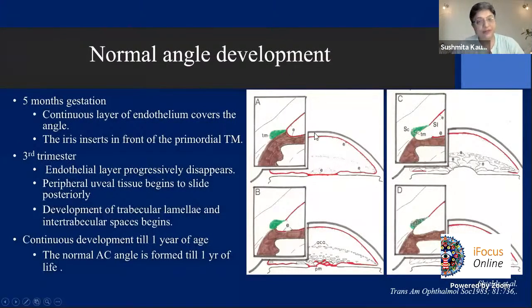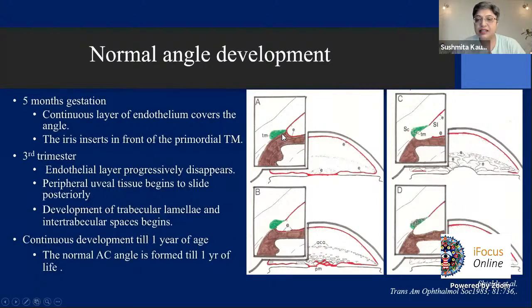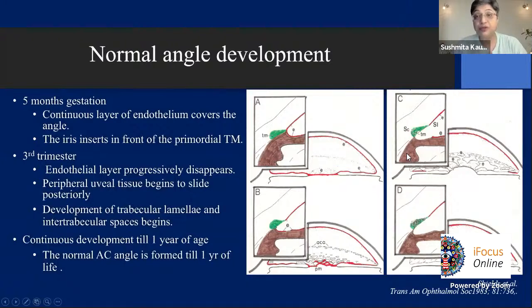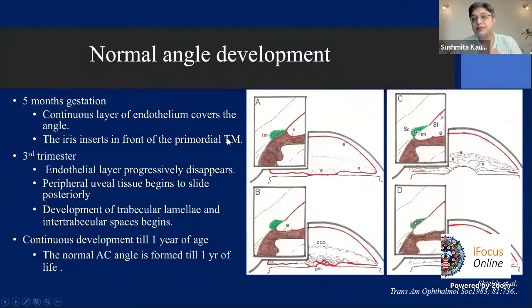A normal infantile angle has a flat iris insertion, ciliary band is generally present, stroma not well defined as it keeps developing, the major arterial circle of the iris is visible, and radial vascular pinus are seen. Regarding development: at five months there's no sign of the angle — a continuous endothelial layer covers it and the iris inserts just in front of the primordial trabecular meshwork. By the third trimester this endothelial layer progressively disappears and peripheral uveal tissue begins to slide posteriorly.